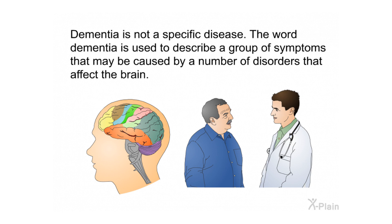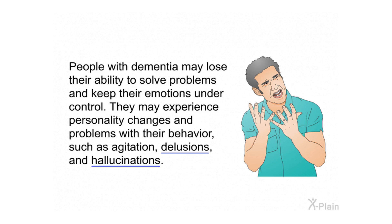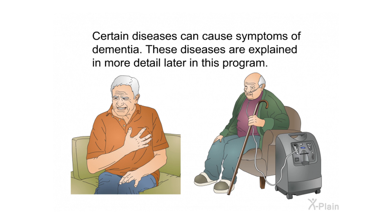Dementia is not a specific disease. The word dementia is used to describe a group of symptoms that may be caused by a number of disorders that affect the brain. Dementia seriously weakens a person's intellectual abilities, interfering with their normal activities and relationships. People with dementia may lose their ability to solve problems and keep their emotions under control.